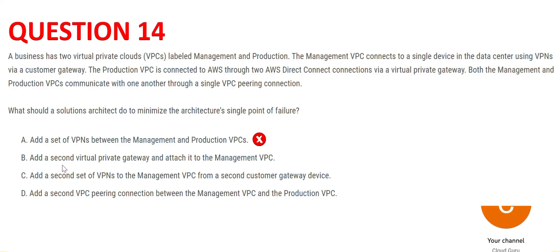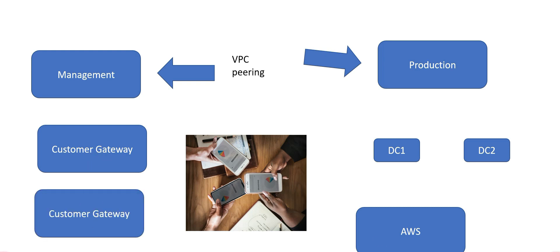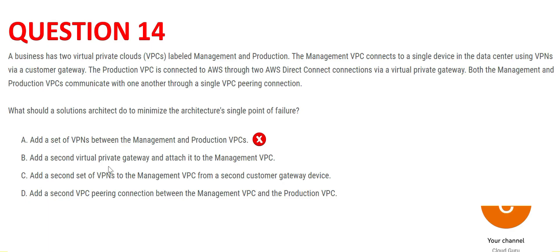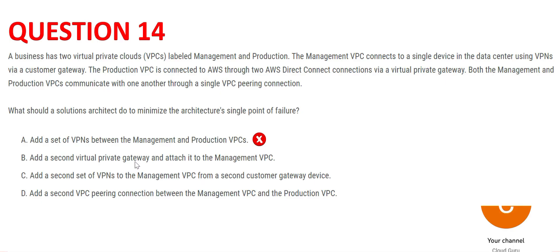Option B says add a second virtual private gateway and attach it to the management VPC. This is trying to address the customer gateway as a single point of failure. But the correct approach would be to add one more customer gateway — not a virtual private gateway — since both serve different purposes. If the customer gateway fails, adding a virtual private gateway doesn't help. So B is wrong and C is correct.